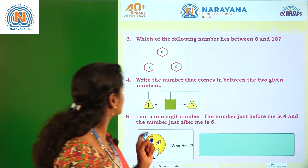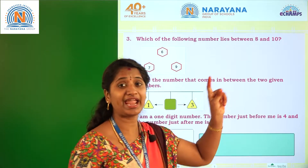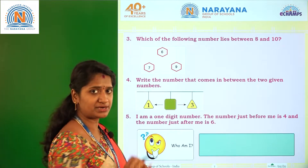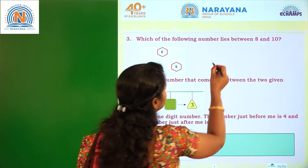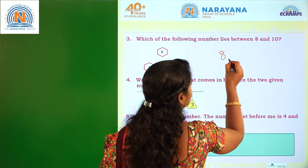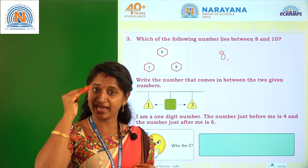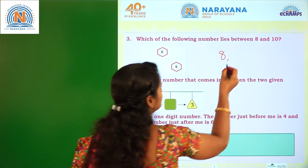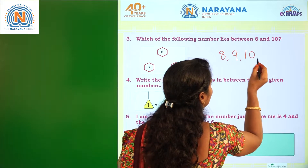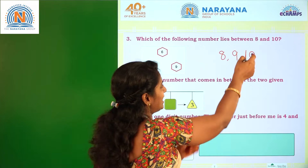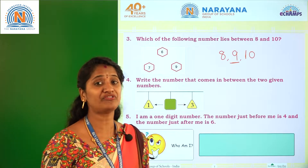Let us check the next question. Question number 3: Which of the following numbers lies between 8 and 10? Here, 8 after using forward counting is 9, and then comes 10. So the number between 8 and 10 is 9.